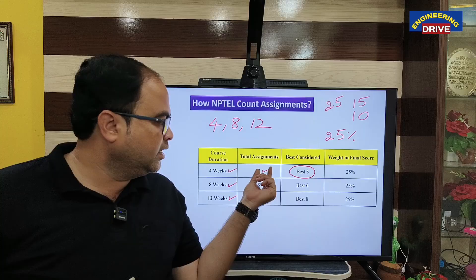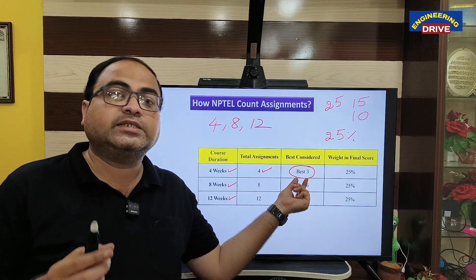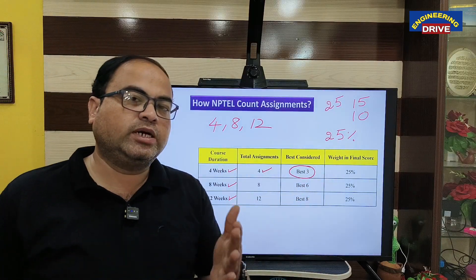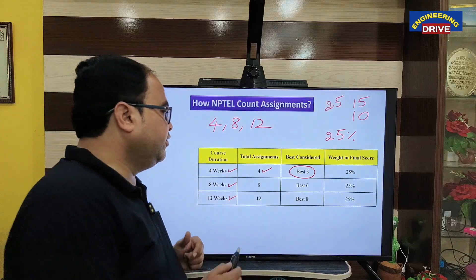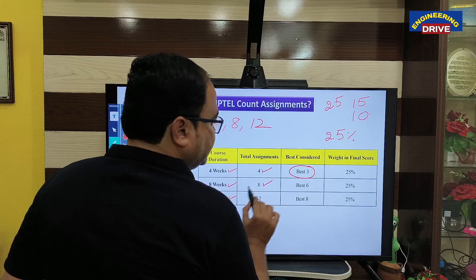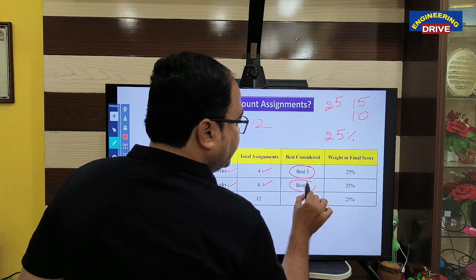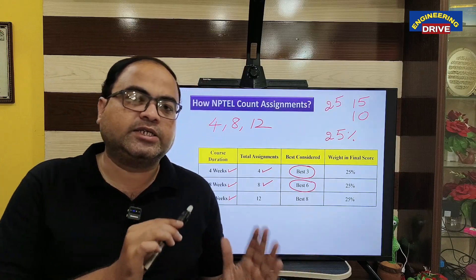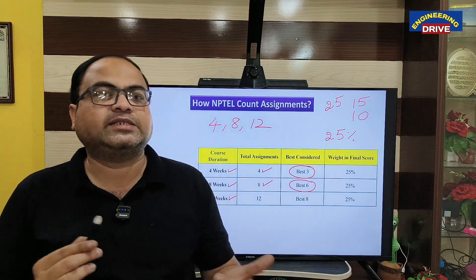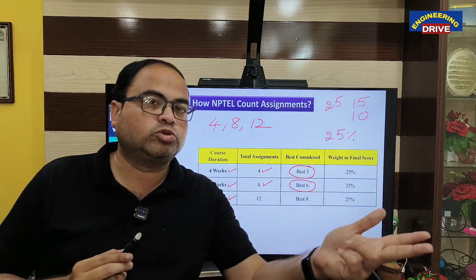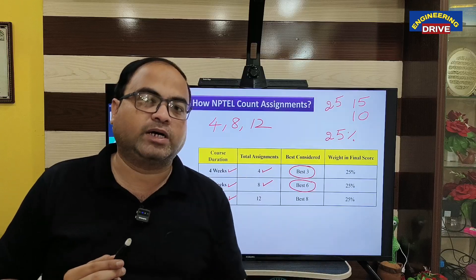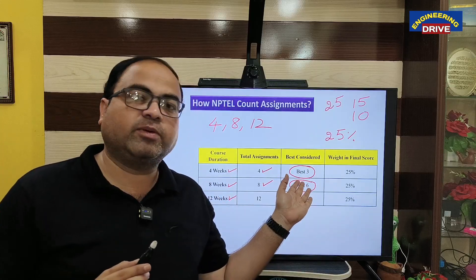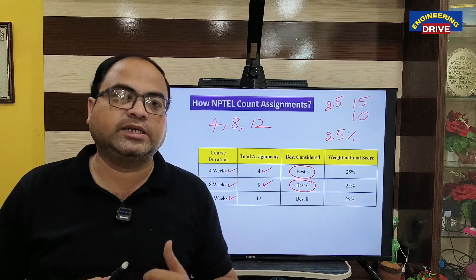For students who have applied for an 8-week course: if you have submitted 8 assignments, NPTEL will consider only the best 6 assignments, which means 2 assignments are dropped. NPTEL considers those extra 2 assignments as an option. The assignments in which you scored less marks or which you have not submitted will be removed from that list. This is one benefit for the NPTEL aspirant to get good marks in assignments.